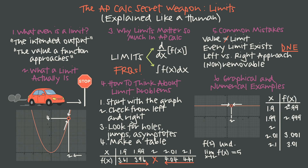Looking at a second example from a table — a different scenario — we're approaching x equals 2. On the left-hand side, the function values are getting close to 3. On the right-hand side, the values are also getting close to 3. Because we're approaching the same value from both sides, the limit as x goes to 2 of f(x) equals 3.